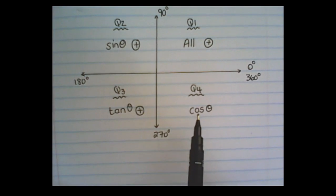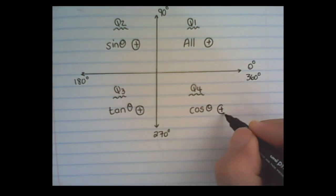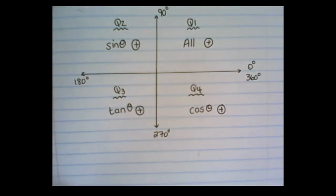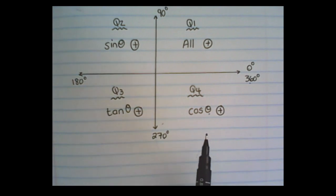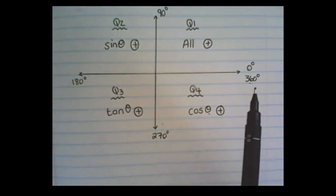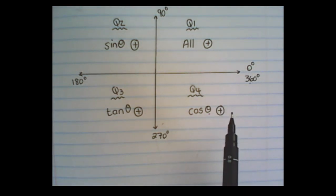And in quadrant 4, only cosine would be positive. That means any value for theta between 270 degrees and 360 degrees substituted into cos theta will give us a positive answer. But for sine and tan, it will give us a negative answer.